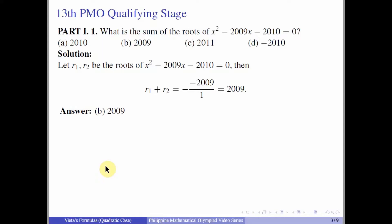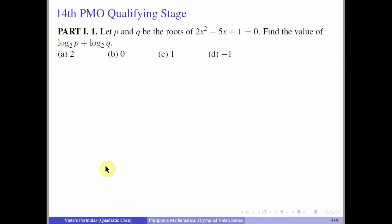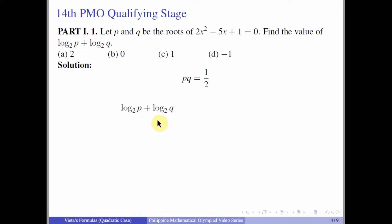From the 14th PMO qualifying stage, Part 1, Number 1: Let P and Q be the roots of 2x² - 5x + 1 = 0. Find the value of log₂P + log₂Q. From Vieta's formula, PQ = 1/2. Since we have two logarithms of the same base, we can combine them: log₂(PQ) = log₂(1/2) = -1. The answer is -1.